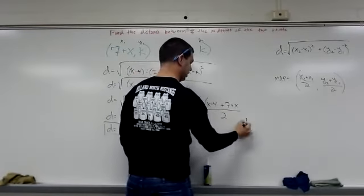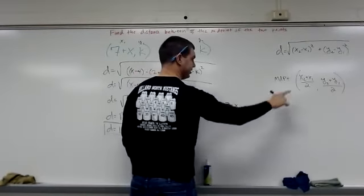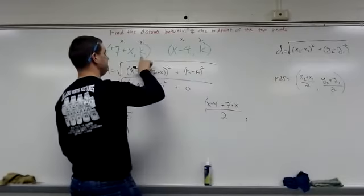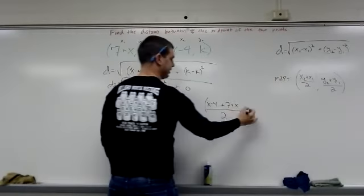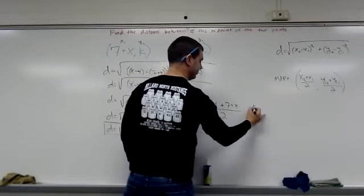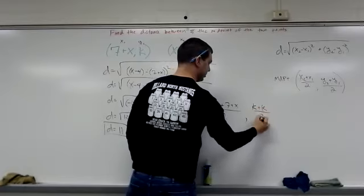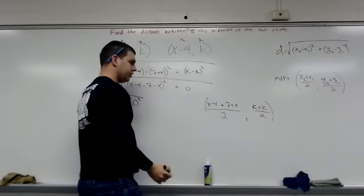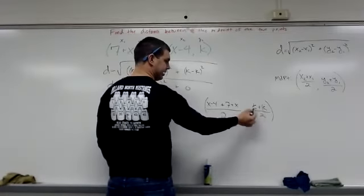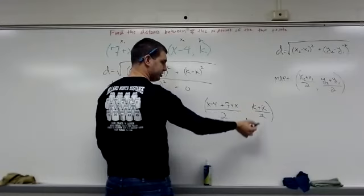Over 2, that's my x value, my y value is y2 plus y1, k plus k divided by 2. So again, this is going to be 2k divided by 2, which is just k.